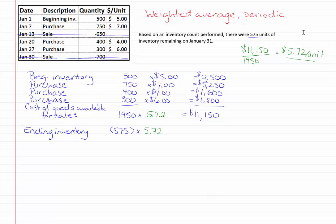So our ending inventory in this case is going to be the number of units from our inventory count and that was 575 units. So we take away our ending inventory of 575 units with that unit cost that we calculated of $5.72 per unit to give us a total ending inventory of $3,289.